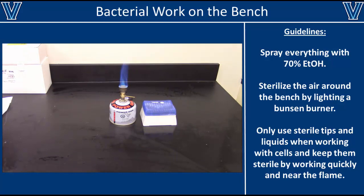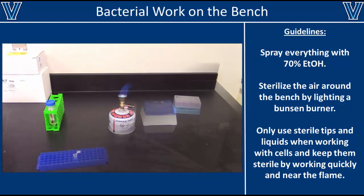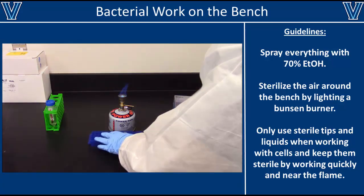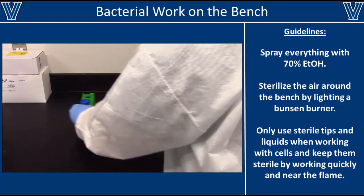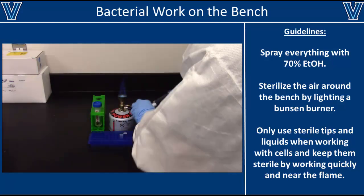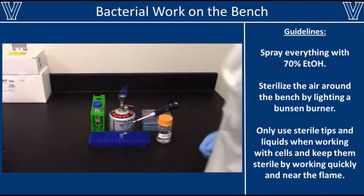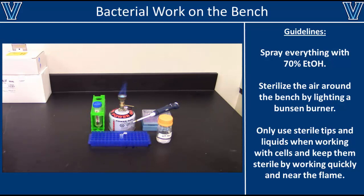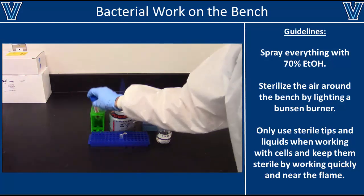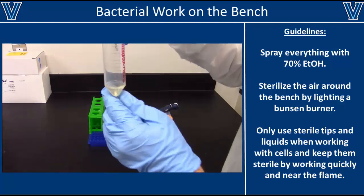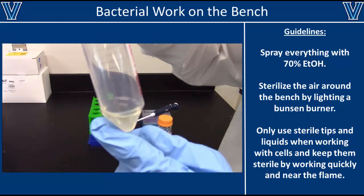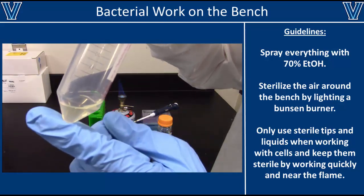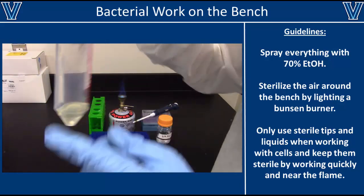Once the Bunsen burner is lit, bring all the rest of your materials onto the bench and keep them as close to the flame as possible, since the flame actively sterilizes the air around it — but it only works for a short radius. Next, visually inspect all of your liquids to make sure they're not contaminated. They should all be absolutely clear; if they're turbid, you'll need to make new ones.